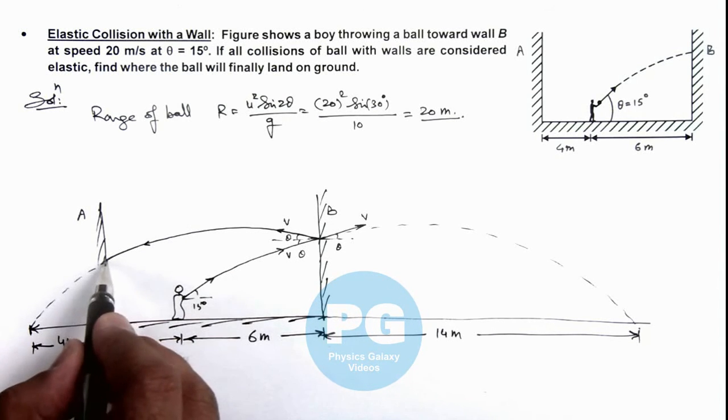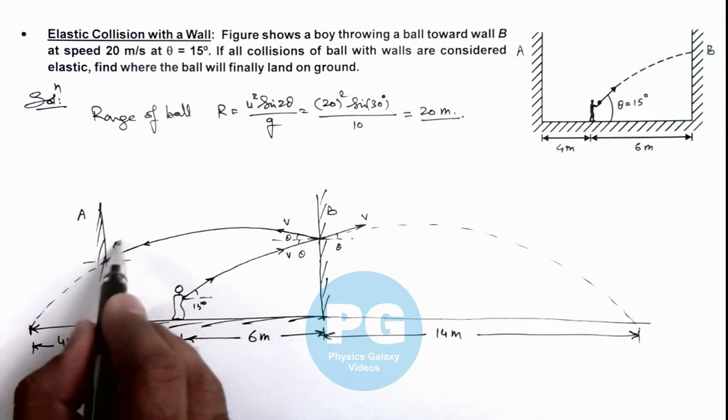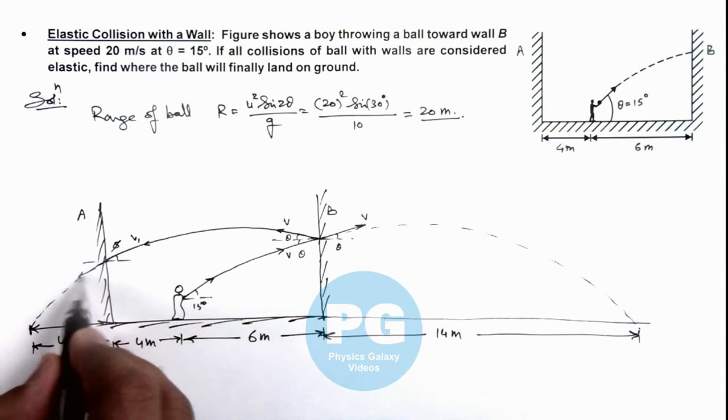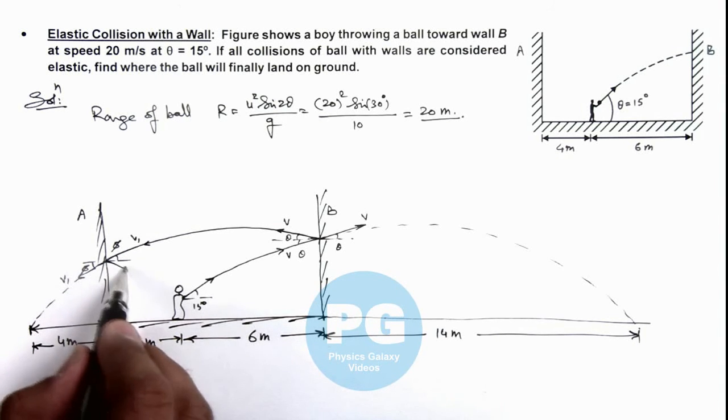That means again, if it strikes at an angle phi with the initial speed v1, and it continues projectile at the same angle phi at v1, here due to elastic collision it will rebound with the same angle phi with the speed v1.